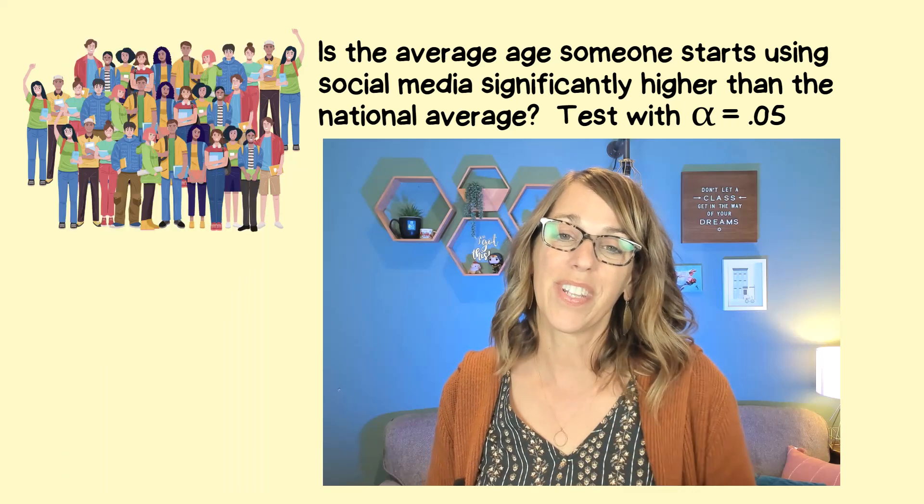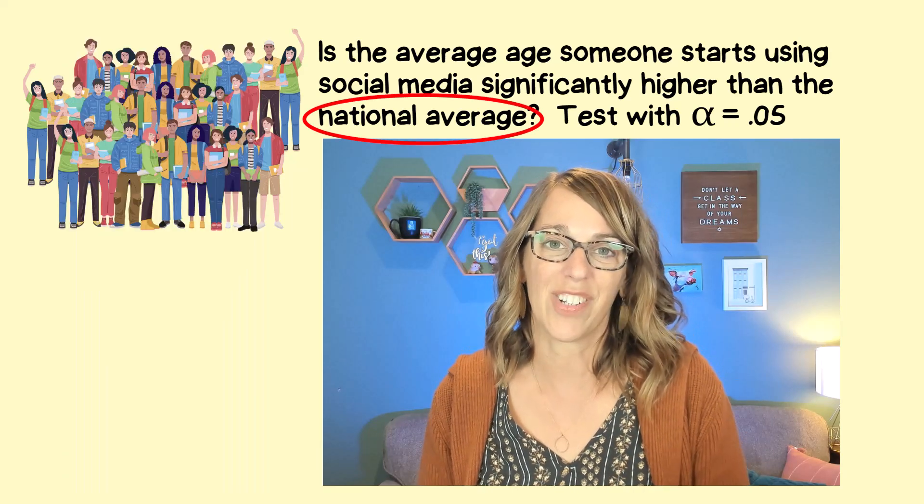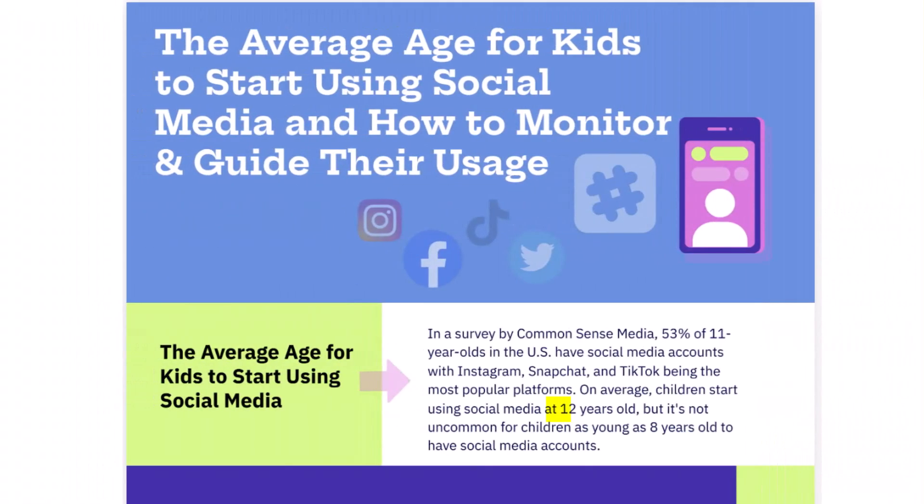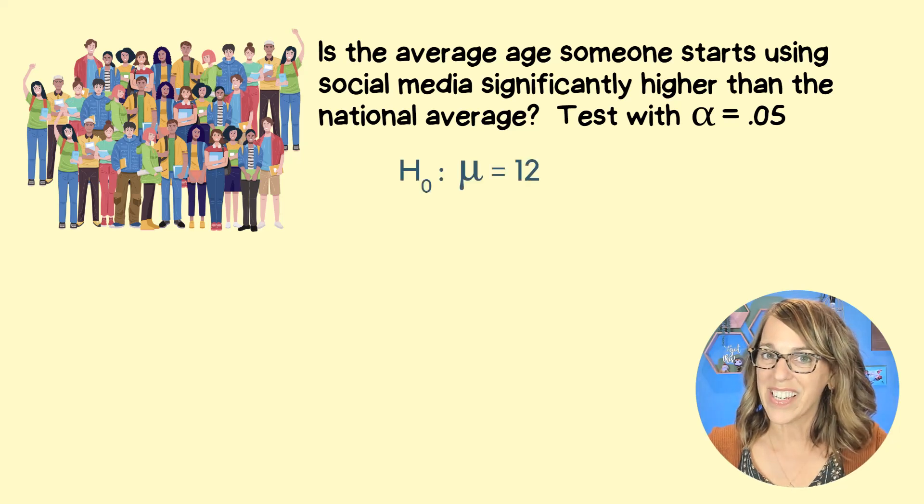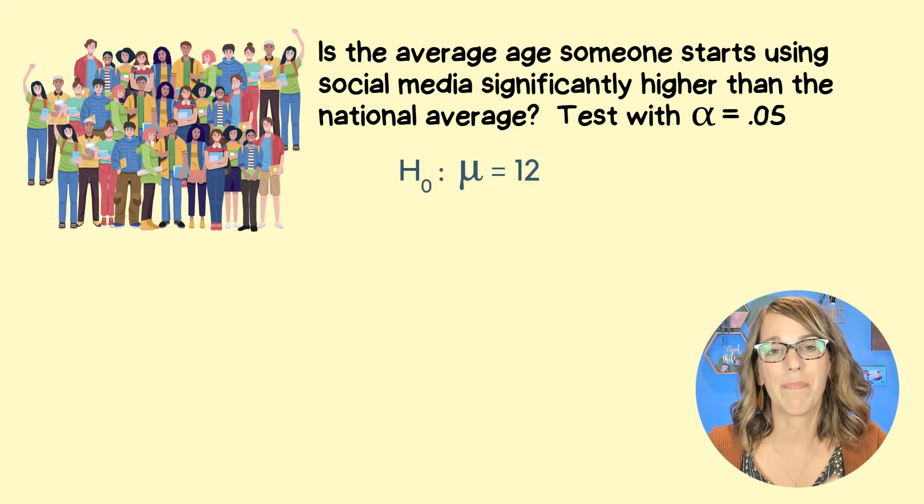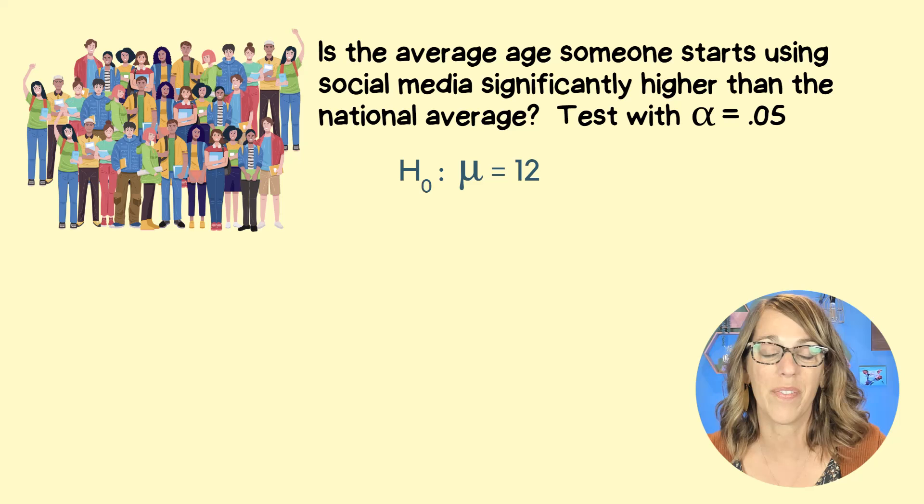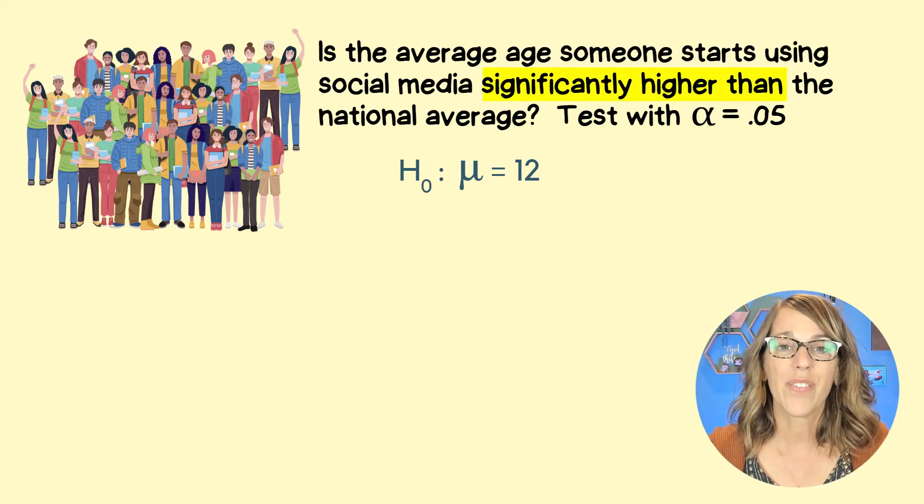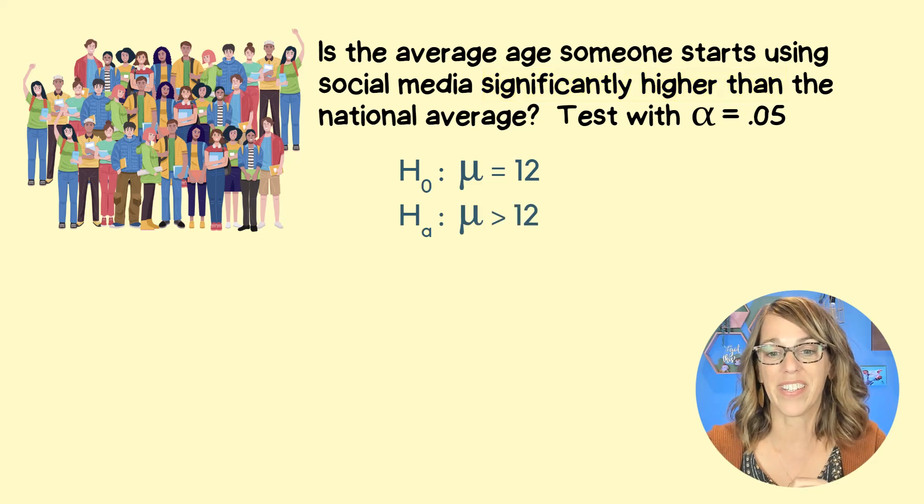Now the very first thing that we want to do is to decide what is that national average. I did just a little bit of searching around online and found that that national average is equal to 12. This is going to help me set up our hypotheses. So that null hypothesis is that the population mean mu is equal to 12, but our question says we think it's significantly higher. So that's my alternative hypothesis that mu is greater than 12.